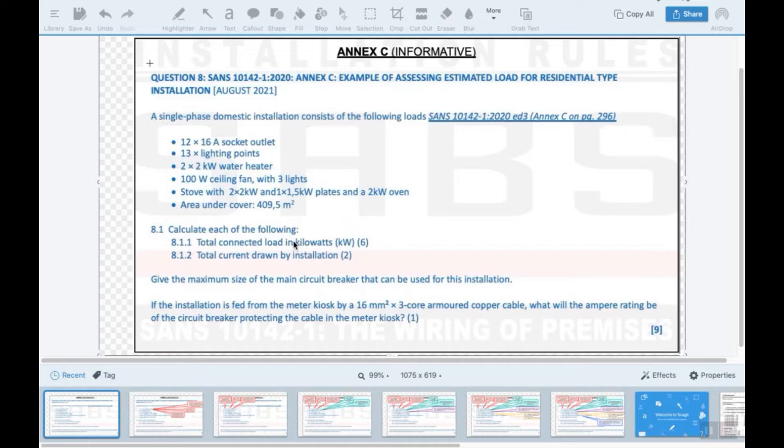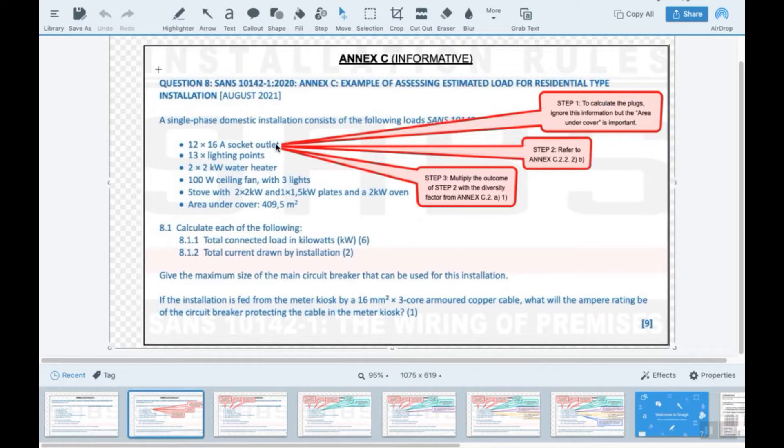So we start here and I've made some notes on these slides. Firstly, the first note here would be step one is to calculate the plugs. Ignore this information, but the area here is important. Where do I get this? I get this from the SANS, from the annexure itself.